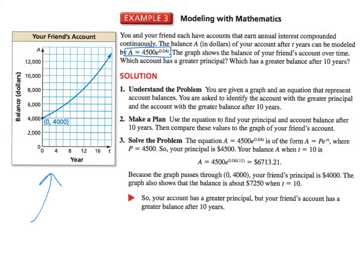Well, easily, the principal is where you start. Your friend has $4,000. You, looking at the equation, what's your initial value? $4,500. So easily, your account starts with the greater principal.